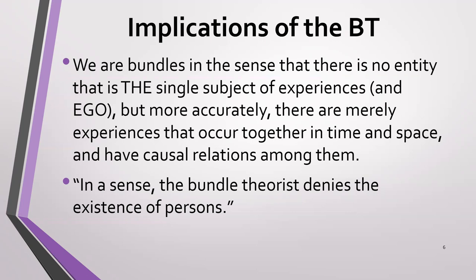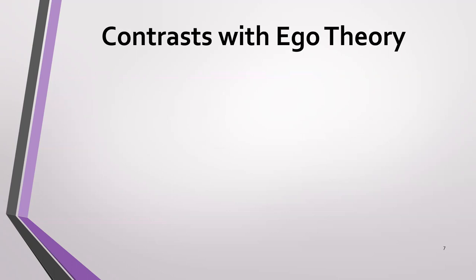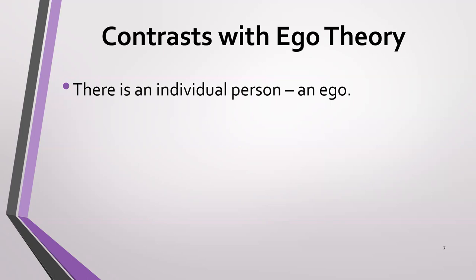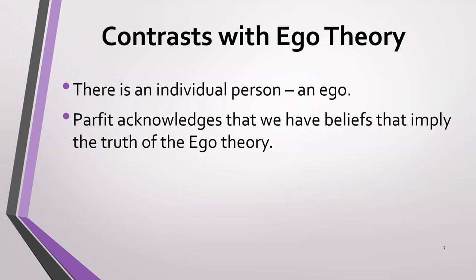So there are no persons, and this is his view of personal identity — there's really no personal identity over time because no persons exist. Let's contrast this to make clear why Parfit has this view. First of all, he describes an ego theory. The most prominent supporter might be Descartes. The idea is that there's an individual person or an ego — not to be confused with Freudian psychology — that's what the person is. Parfit acknowledges that we have beliefs that imply the truth of the ego theory, that there is such an entity as a person, and the bundle theorist has to say something about those beliefs.